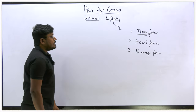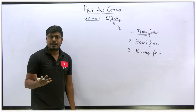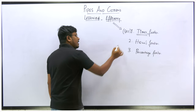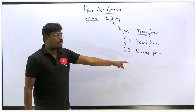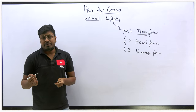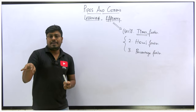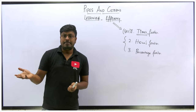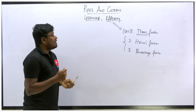These three models appear in many competitive exams. About 80% of questions come from the times-faster and hours-faster models. Percentage-faster is a rare case. So: Model 1 is 'times faster', Model 2 is 'hours faster', and Model 3 is 'percentage faster'.